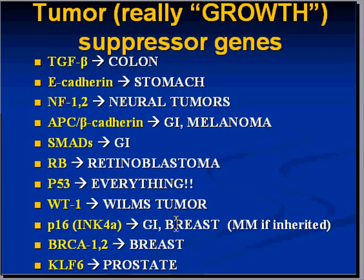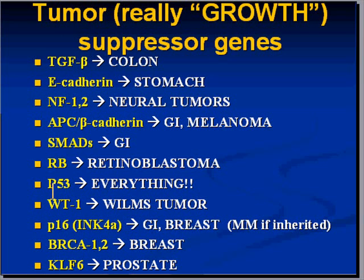Mutations of genes, whether inherited or acquired, can give rise to whole different types of malignancies. As you might guess, BRCA is the breast cancer gene. KLF6 — mutation of that suppressor gene might give rise to human carcinoma of the prostate, and indeed it does. A large portion of the so-called suppressor genes, when mutated, wind up giving rise to human cancers.